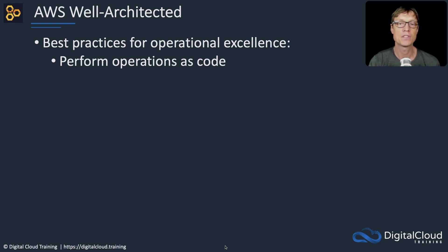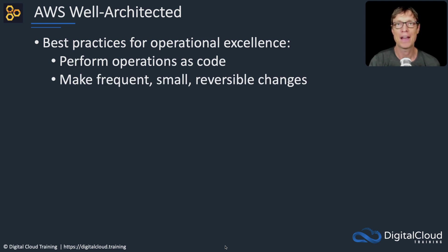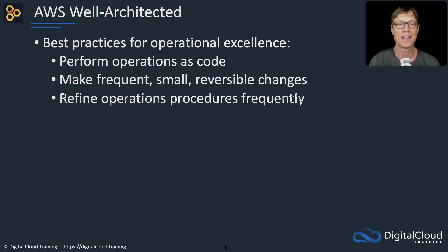Perform operations as code — don't perform operations manually. Use tools like CloudFormation to automatically build your infrastructure. Make frequent, small, and reversible changes rather than big changes that are difficult to roll back. This helps you if something goes wrong, as you can quickly roll back and try again.